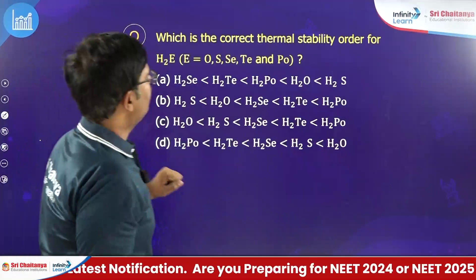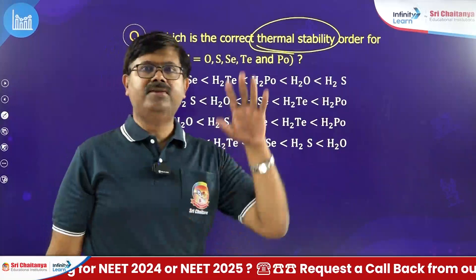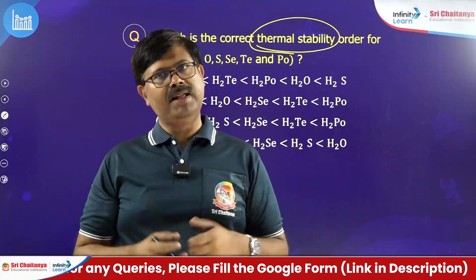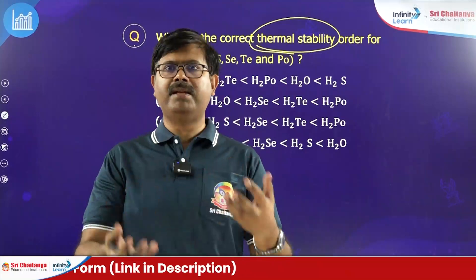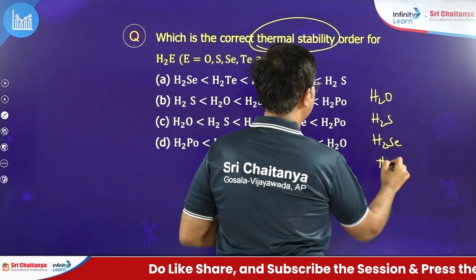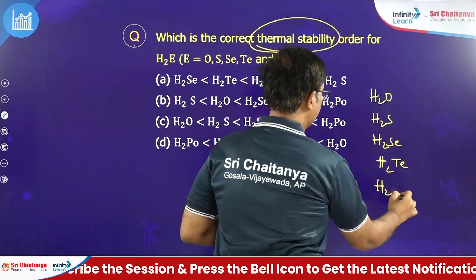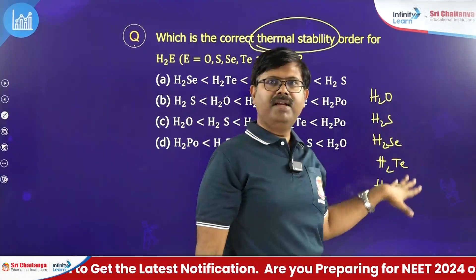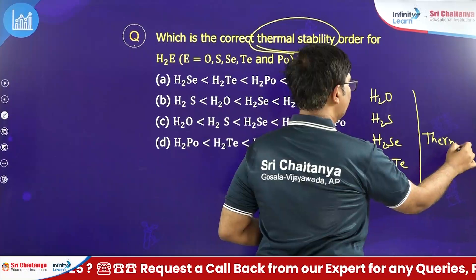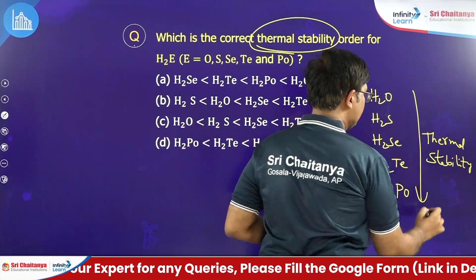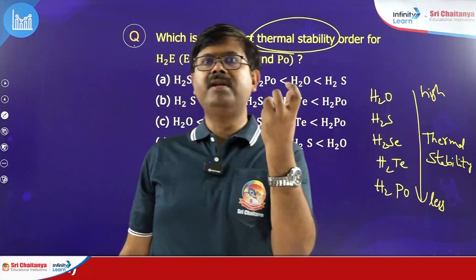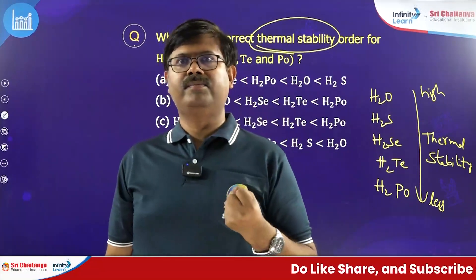Which is the correct thermal stability order? As you go down the group, the bond length increases in these hydrides. When bond length increases, bond strength decreases. Bond strength decreasing means the compound breaks down easily when you apply heat. So going from H2O to H2S to H2Se to H2Te to H2Po, the bond becomes progressively weaker and breaks down more easily under heat. Therefore thermal stability — stability towards heat — is less for polonium and high for H2O, which won't easily break down because of the strong bond energy.